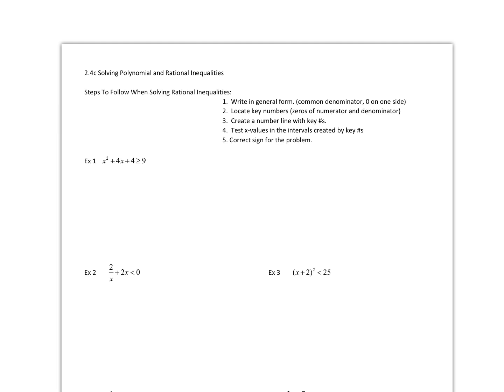We're going to solve polynomials and rational inequalities. Here are the steps: write it in general form. If you have to get a common denominator, get a common denominator, but ultimately you want a zero on one side of the equation. Locate the key numbers from the numerator and the denominator. Create a number line, then test values, and then check for the correct sign of the problem. Let me walk you through it.